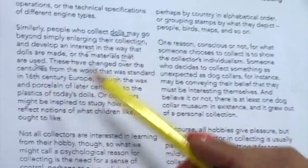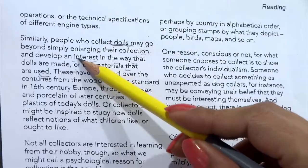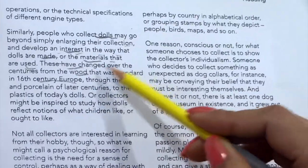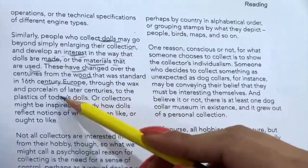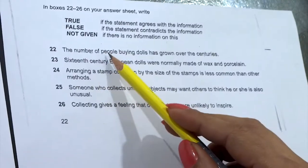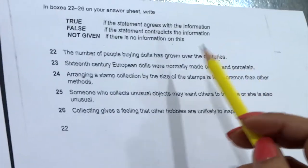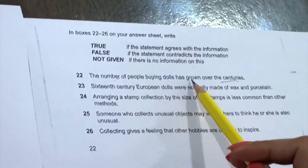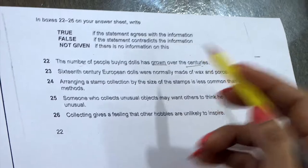It means people are collecting dolls and they have an interest in knowing how the dolls are made or what materials are used. The passage mentions: 'These have changed over the centuries from the wood that was standard in 16th century Europe, through the wax or porcelain of later centuries, to the plastics of today's dolls.' They are talking about centuries but only about materials used, not about whether the number of buyers has grown or not. So the answer will be NOT GIVEN.